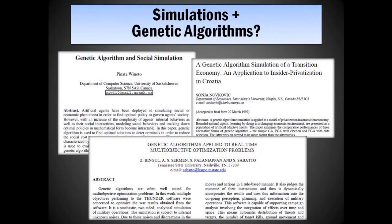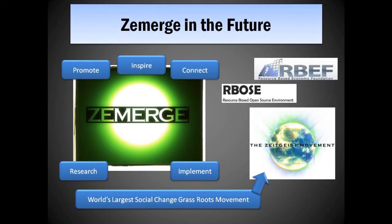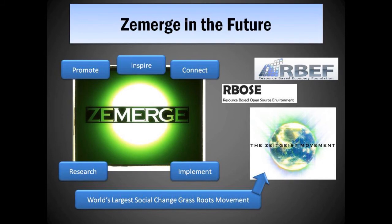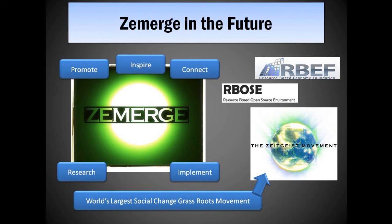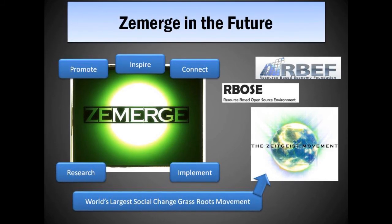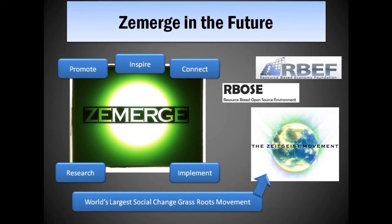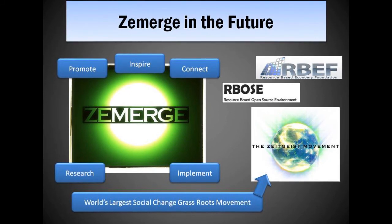As Peter Joseph of the Zeitgeist Movement states, no one really invents anything from scratch. Knowledge is serial and we all contribute little pieces by mixing, borrowing, and recombining previous ideas to spawn new ones — so these ideas are not new. Now it's time to crank up the human thought engine and take these ideas to the next level. The goal of the Zemerge project at the moment is to promote the concept to the general public, as well as to inspire future generations to pursue this field of study. I'm also currently positioning the project with the goals of the Zeitgeist Movement, to be the planetary AI system Peter Joseph speaks of.